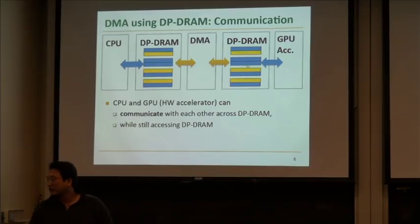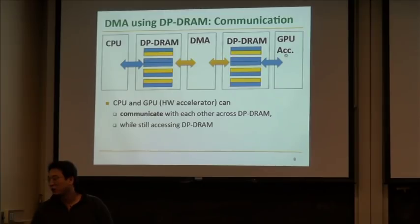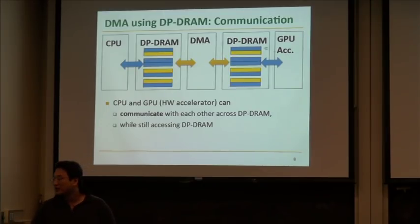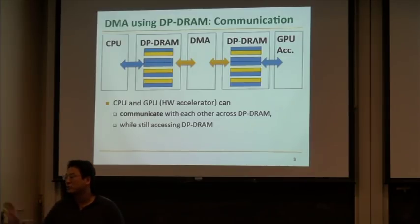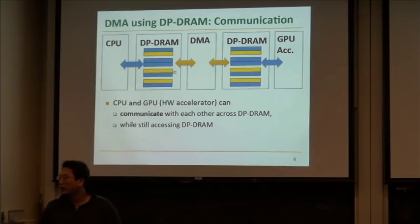Additionally, if there are two processors such as a CPU and GPU, the CPU is on the left side and the GPU or some other hardware accelerator is linked through the dual-port memory and DMA. So if there is communication between the CPU and GPU or CPU and hardware accelerator, we can also communicate through dual-port memory and DMA.